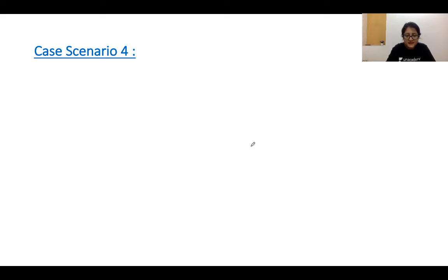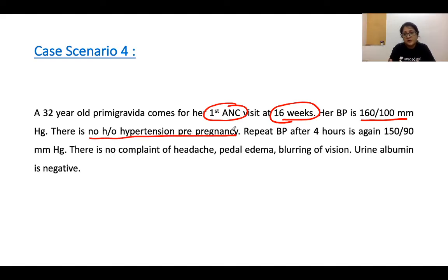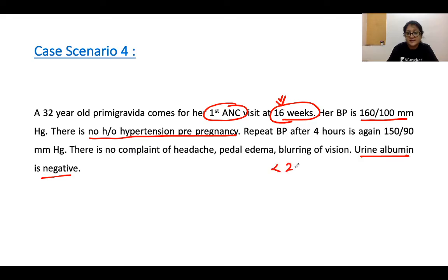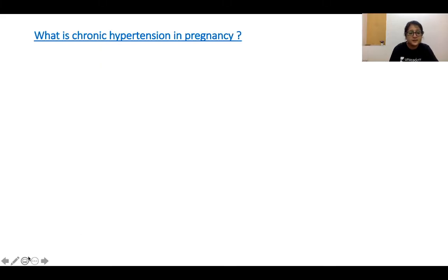Case 4: A 32-year-old primigravida presents for her first antenatal visit at 16 weeks with BP 160 by 100, confirmed at repeat as 150 by 90. There is no headache, pedal edema, or blurring of vision, and urine albumin is negative. Since high BP is identified before 20 weeks, this is likely chronic hypertension rather than gestational hypertension.